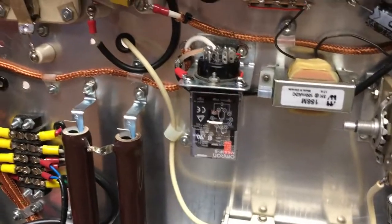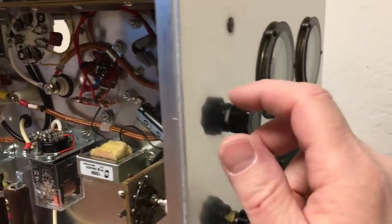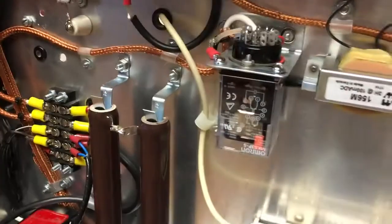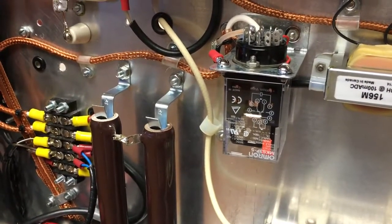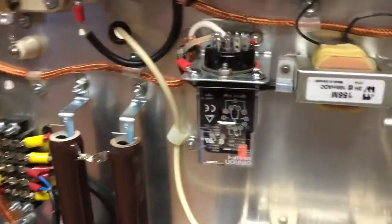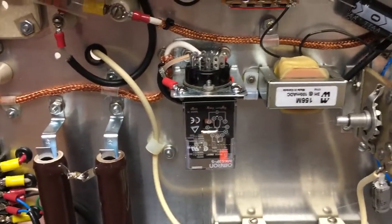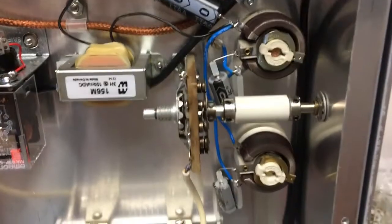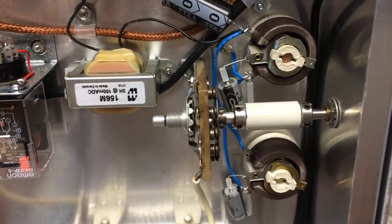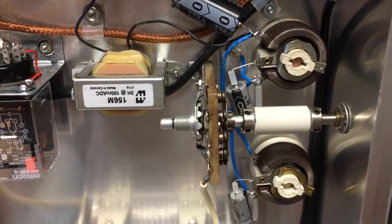I have the relay all powered up now. I can switch the switch on the front panel back and forth and you see the relay opens and closes, and there's the rheostats for the AB bias supply when it's switched to it.